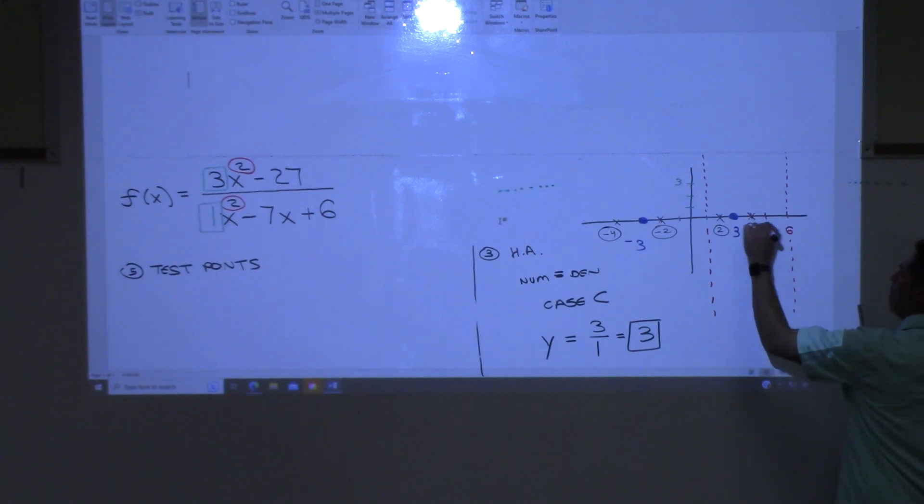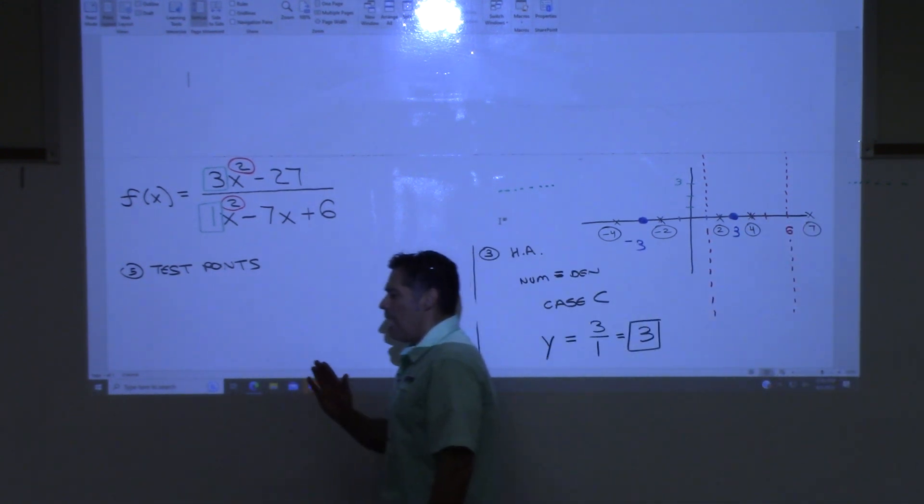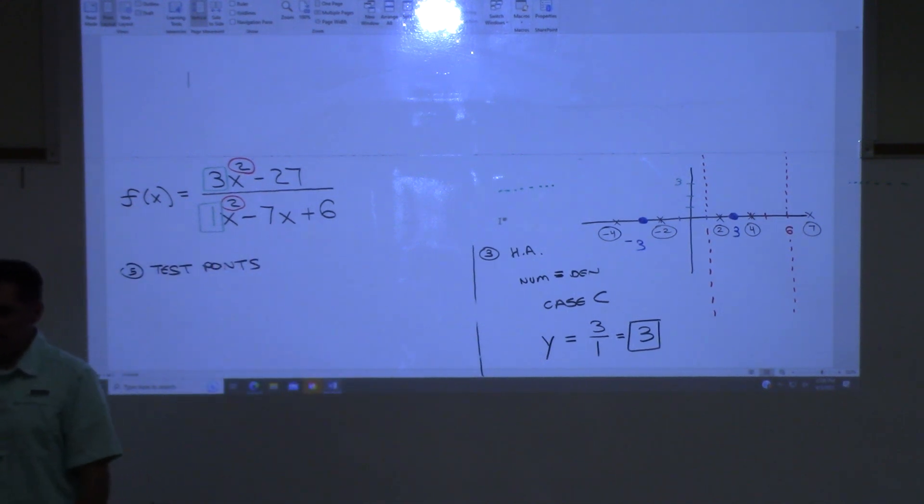Pick five, right? One more. Seven. There you go. So your test points have to be in between or on each side of each x-intercept and vertical asymptote. You have to fill in all the little gaps in between them.